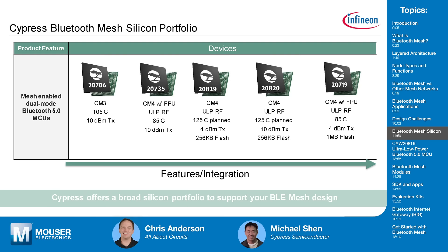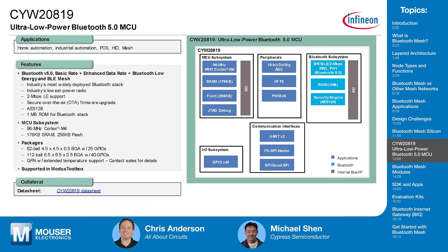The 20819 and 20820 are the latest and greatest devices. Both include 256 KB of flash and support high temperatures up to 125°C, with even lower power consumption than the 20735. The key difference: the 20819 offers 4 dBm TX output power while the 20820 supports up to 10 dBm. The 20819 features a 96 MHz ARM Cortex-M4, 176 KB SRAM, 256 KB flash, and is offered in 62-pin DGA and 112-pin BGA packages depending on GPIO requirements.